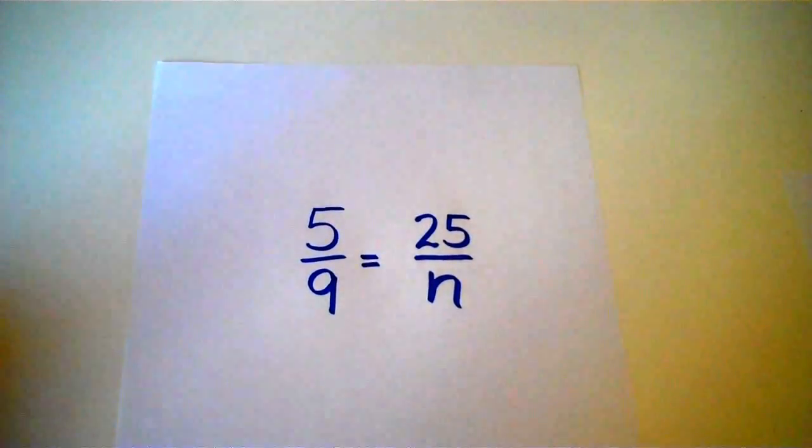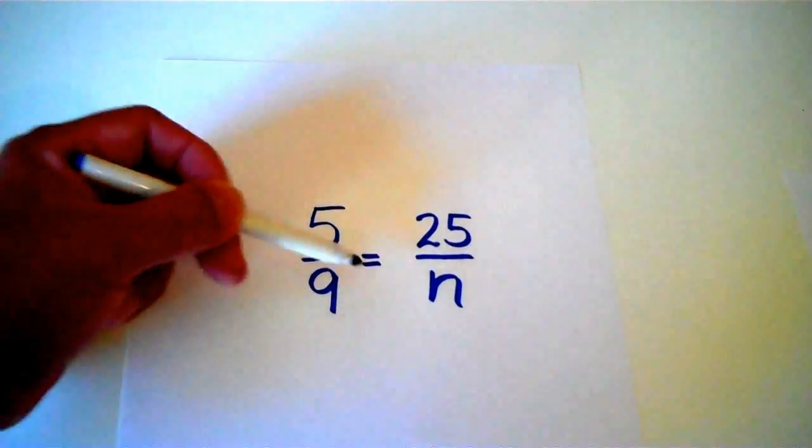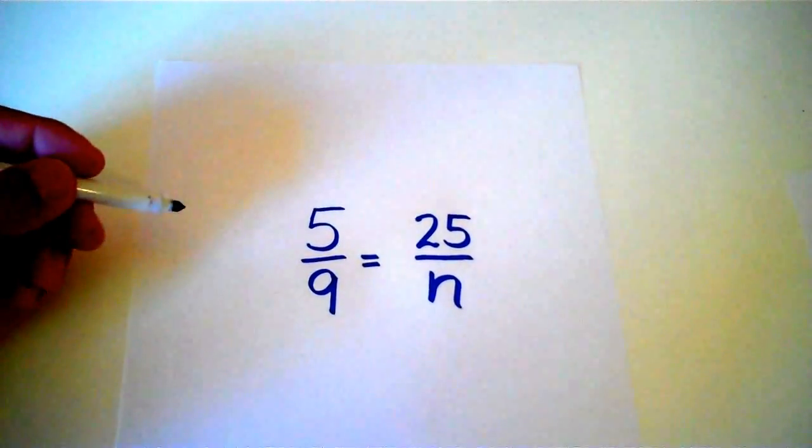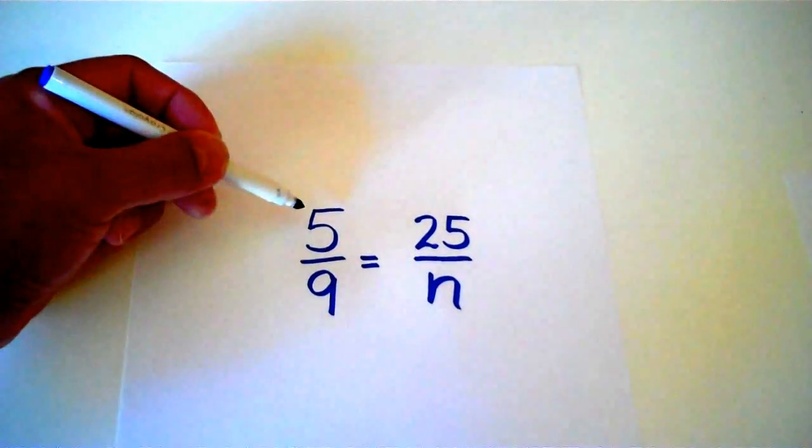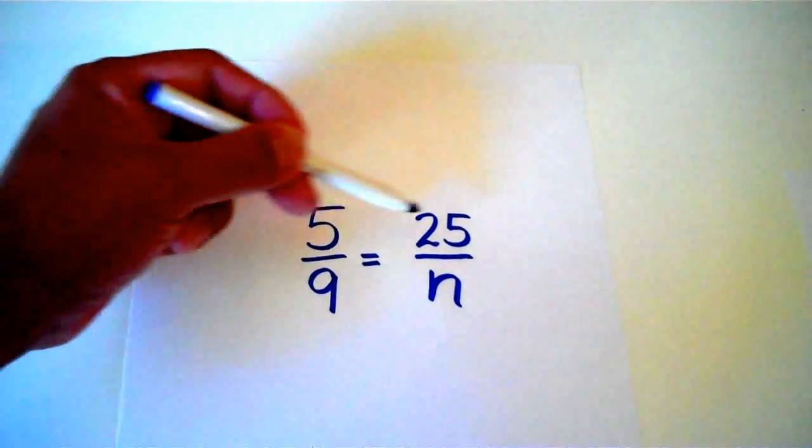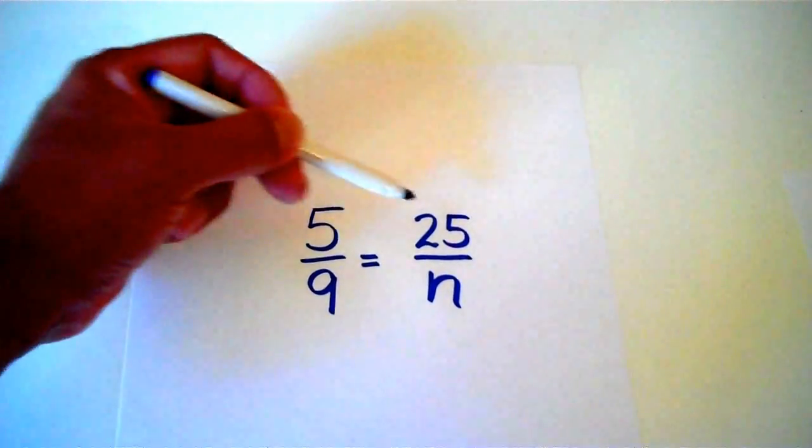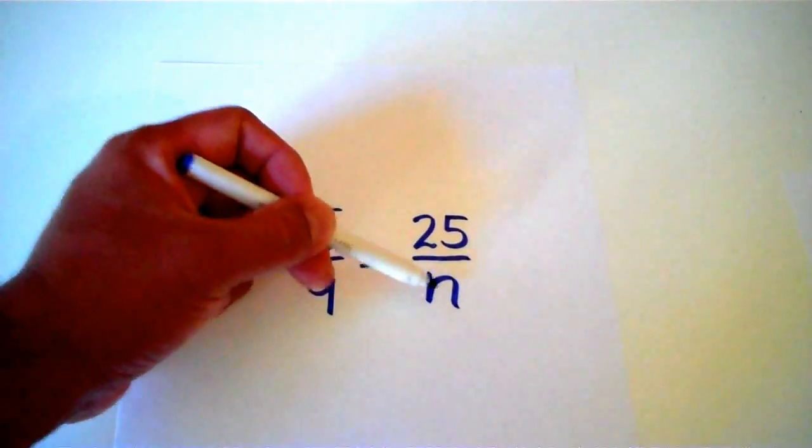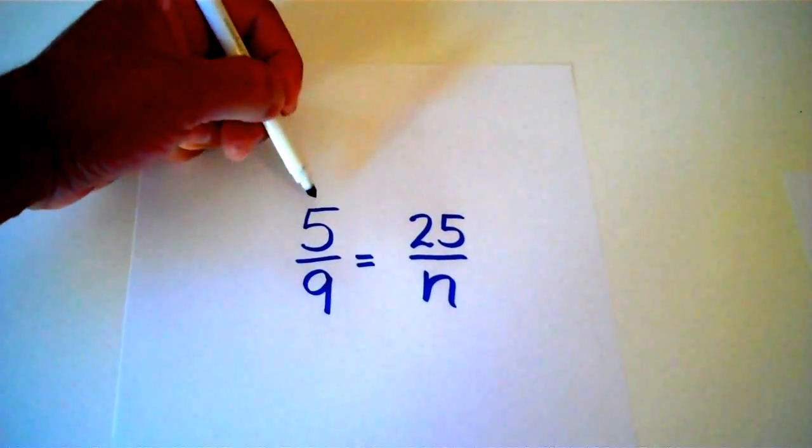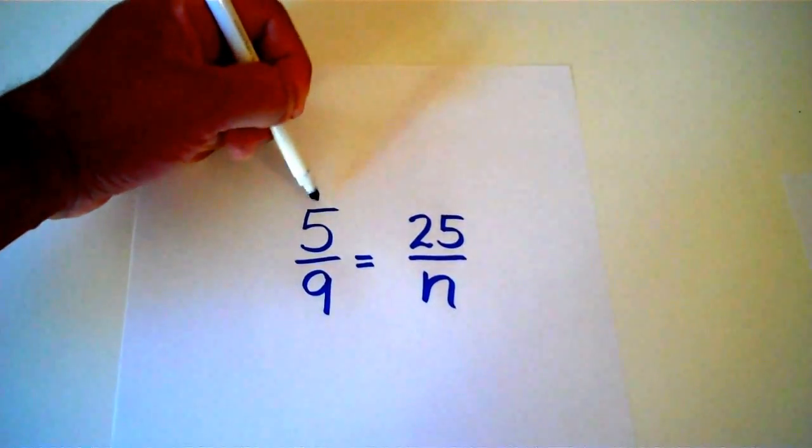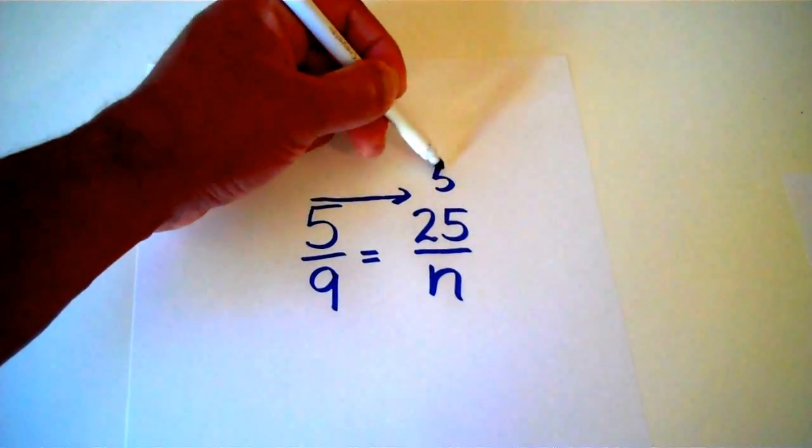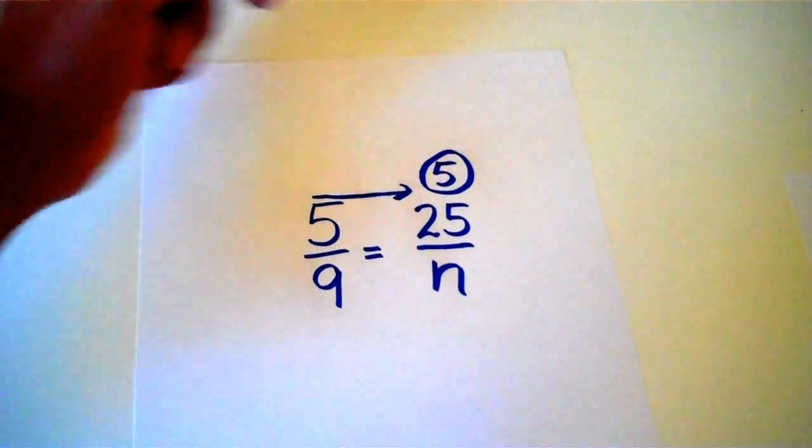So let's take a look at this proportion. We have 5 ninths equals 25 over N. And we're going to do what step 1 said, and that was to divide the smaller number, 5 into 25. Now we're going to do that across, and notice we have to start at the top here, because we can't do this at the bottom, since our variable's at the bottom, and we can't do any dividing with a variable. So we're going to draw our arrow again, like we said in step 1, 5 into 25 is 5.